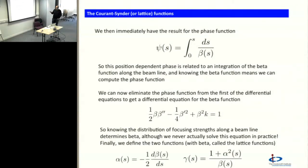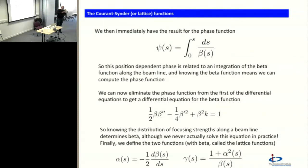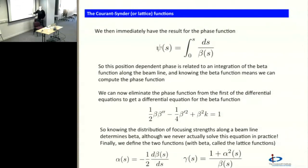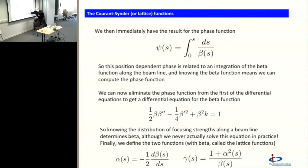Using that equation, I can eliminate the phase function from the first differential equation to get a differential equation for the beta function purely in terms of beta itself and k — the magnet distribution along the beamline. There I have it — the defining equation for the beta function in an accelerator. It's a differential equation involving beta, d²beta/ds², d(beta)/ds, and a term proportional to beta-squared. If I know where my quadrupoles are, I know k — that's just the gradient divided by rigidity — and I can solve this differential equation to find beta as a function of s. That then tells me the maximum amplitude of my particle as it oscillates through the machine. But no one ever solves that equation numerically — there are other ways of doing it.